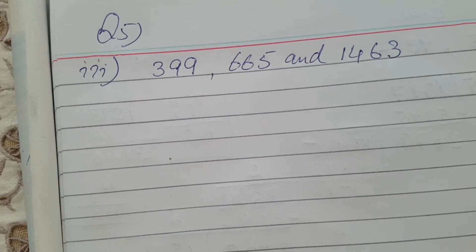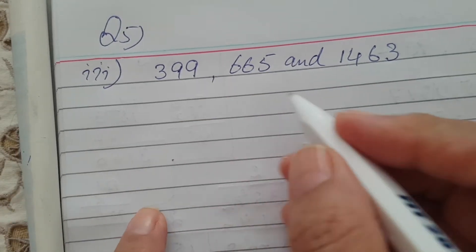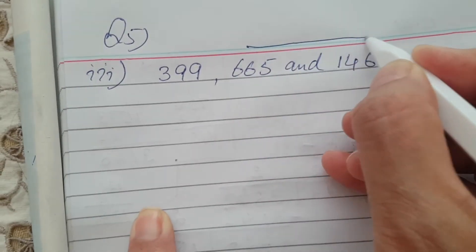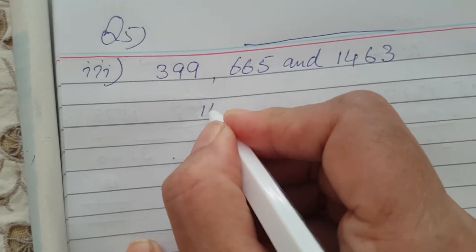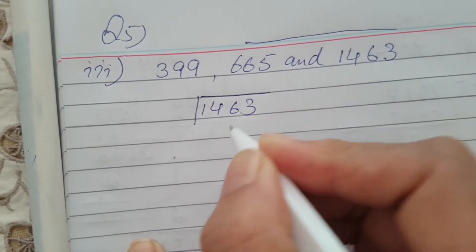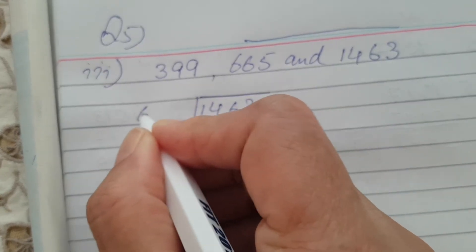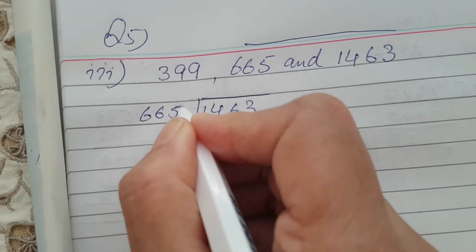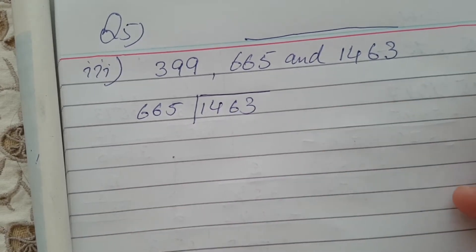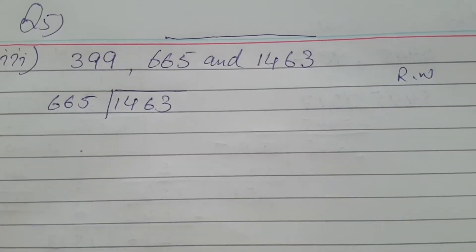Question number five, part three: three numbers are given and you have to find the HCF of all three — the one number which can divide all these numbers exactly without leaving any remainder. We will take two numbers first. Starting from the greater number we will get the answer sooner, so 1463 is the greatest and the other number is 665.